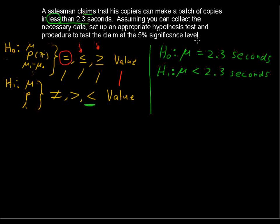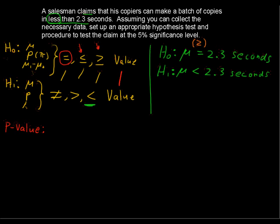Going back to the null hypothesis — the opposite of less than is greater than or equal to, so H₀: μ ≥ 2.3. Now we've got the null and alternative hypotheses. Next, we want the p-value. The p-value is the probability of getting a sample mean at least as extreme as what you got — farther from the mean than you did. For example, if we get a sample mean of 2 seconds, we find the associated p-value, which is some distance away from the assumed null hypothesis mean of 2.3.